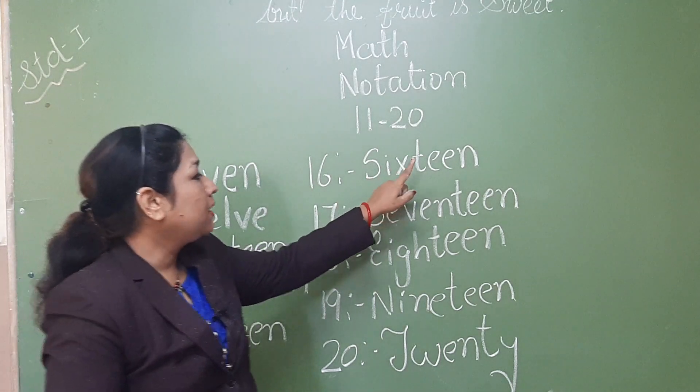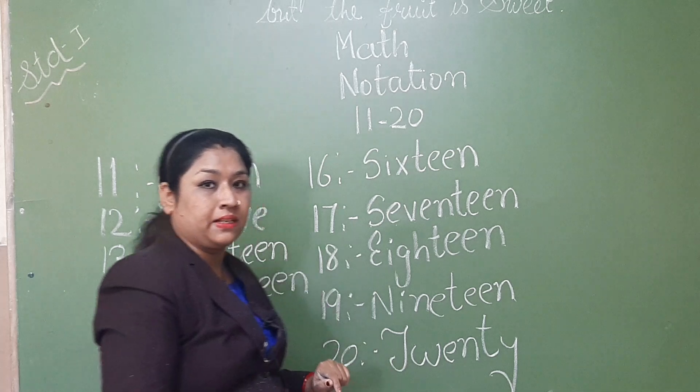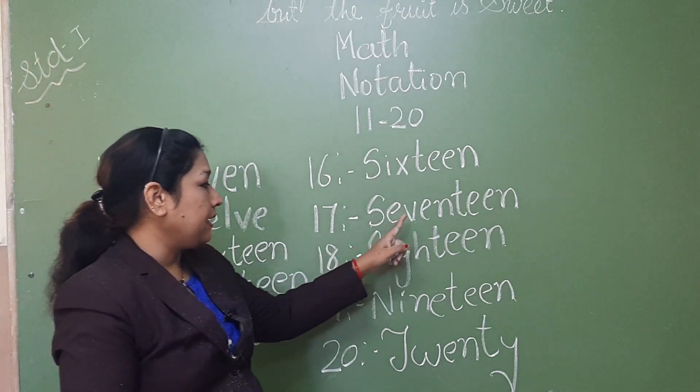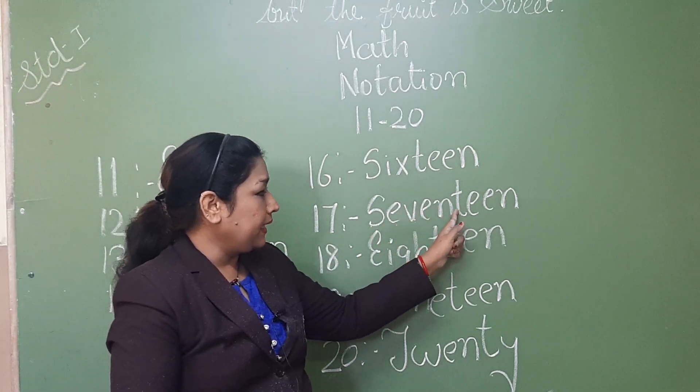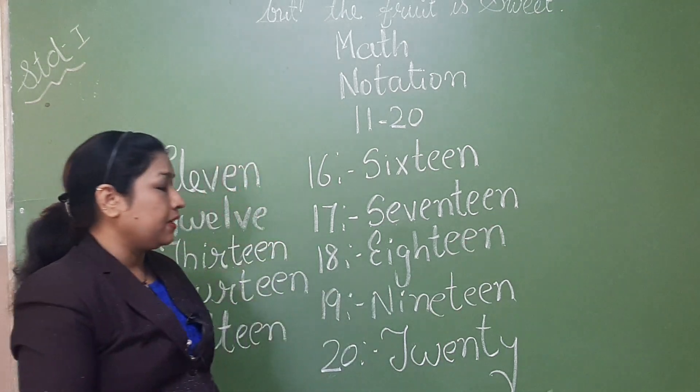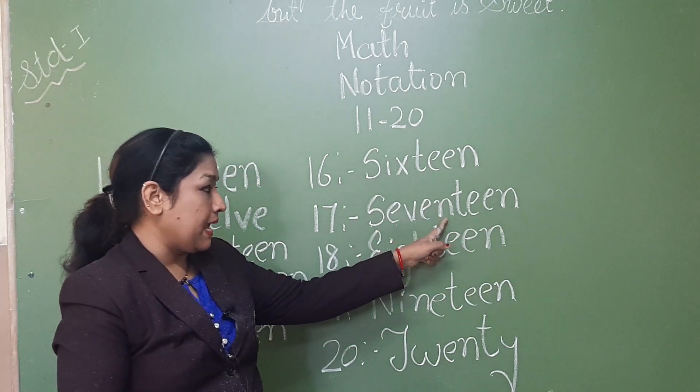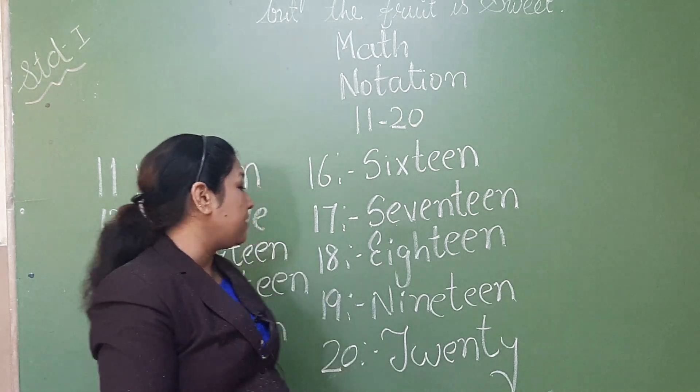16, S, I, X, T, E, N, 16. 17, S, E, V, E, N, T, E, N, 17. Again I am repeating. S, E, V, E, N, T, E, N, 17.